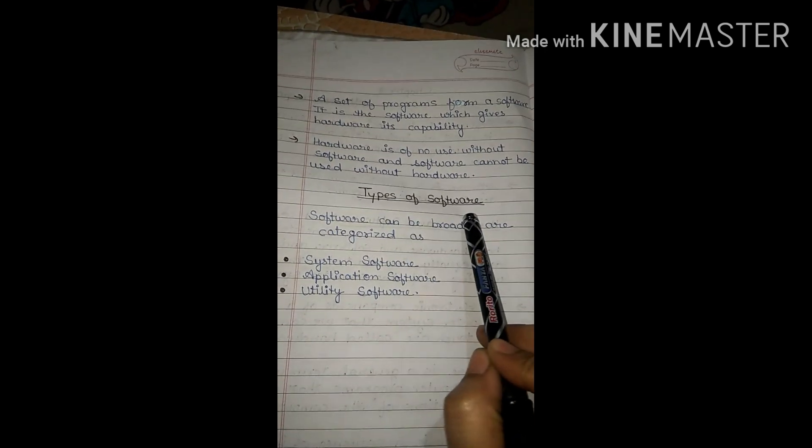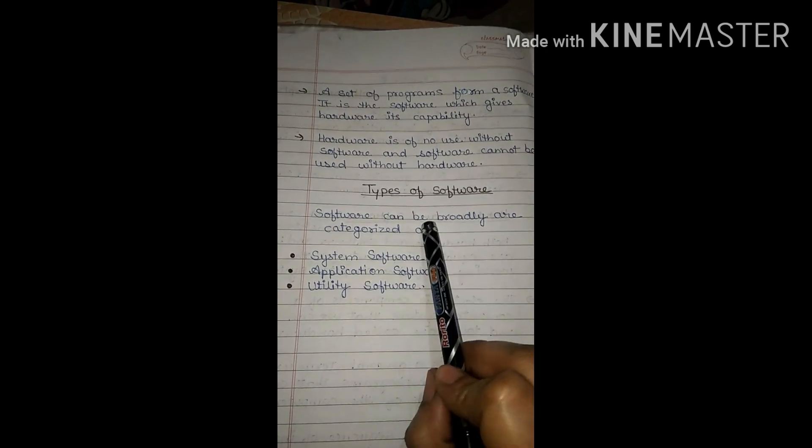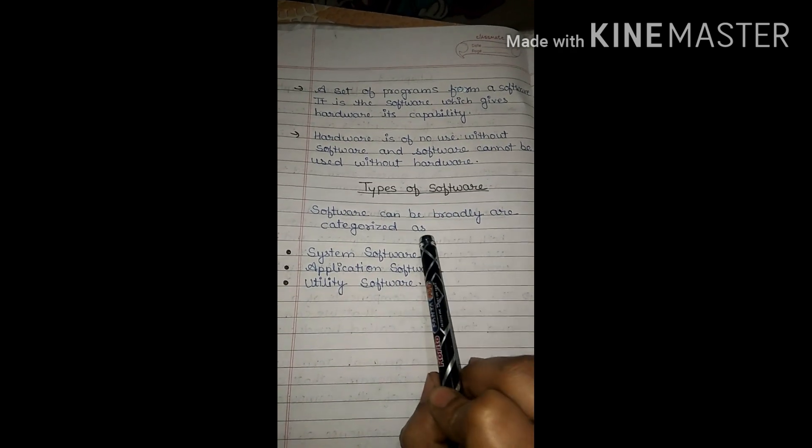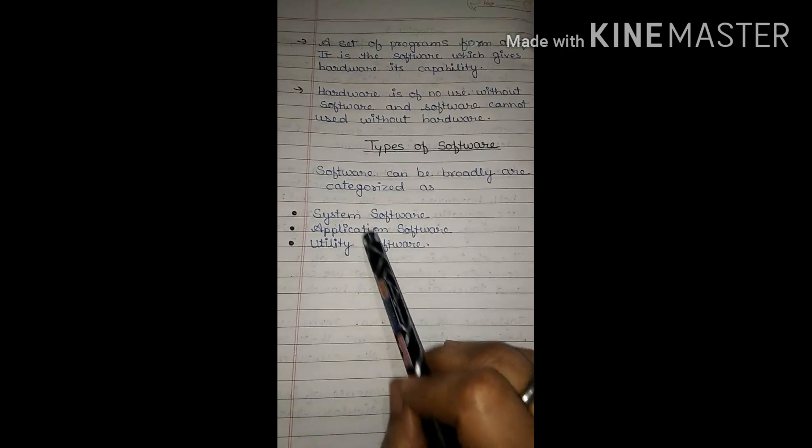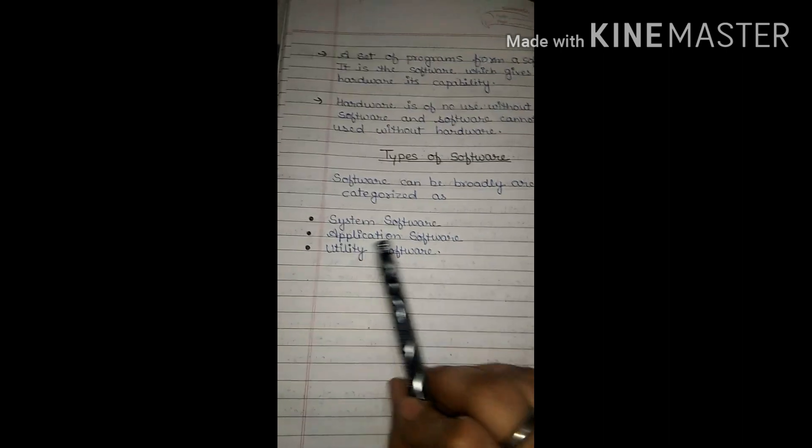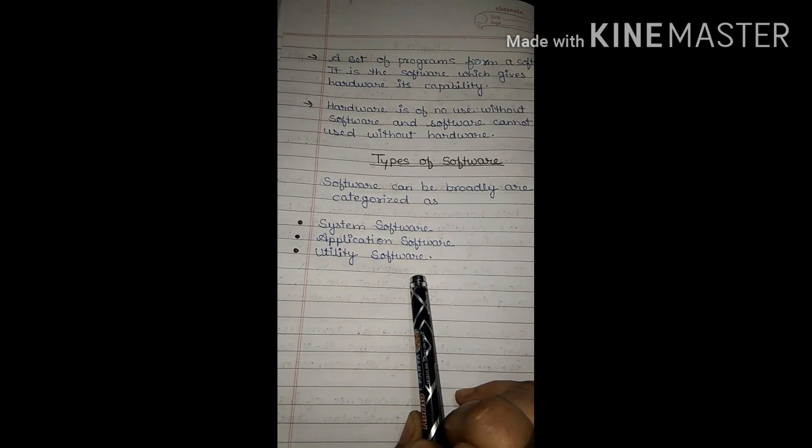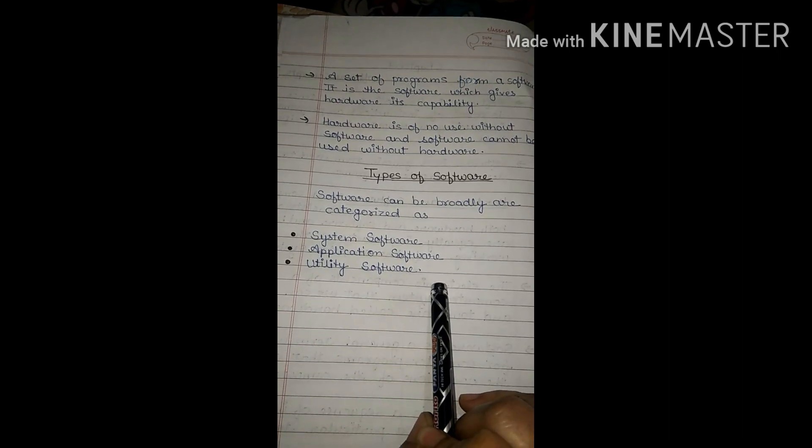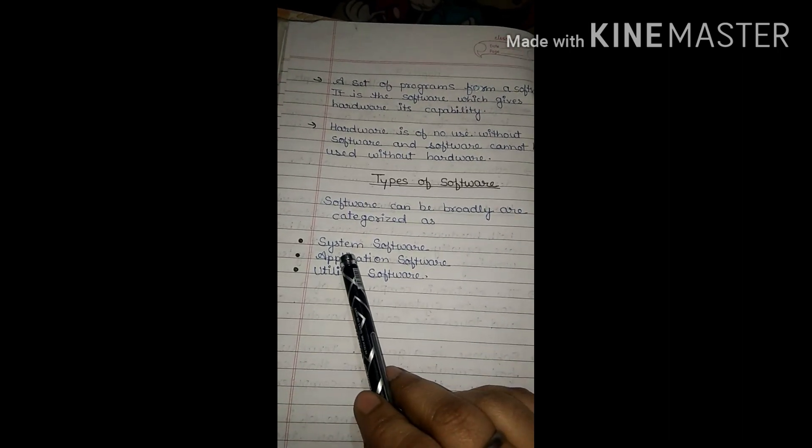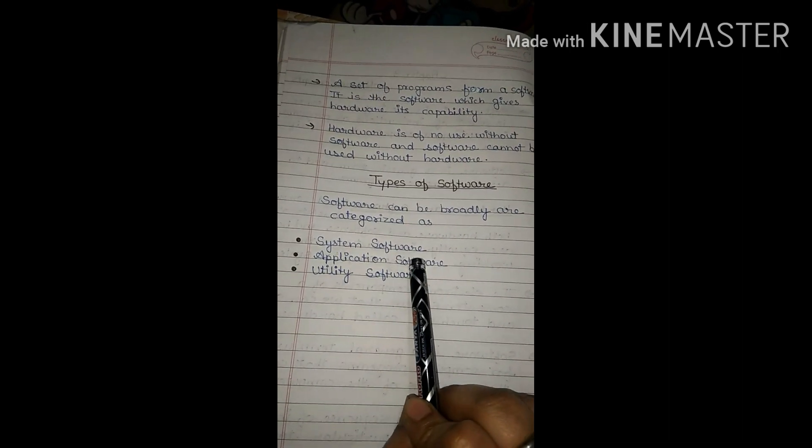Types of software. Software can be broadly categorized as - there are three: system software, application software, and utility software. The next video will discuss system software.